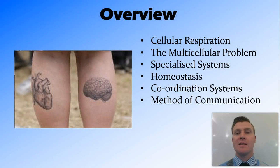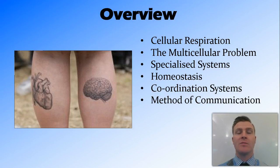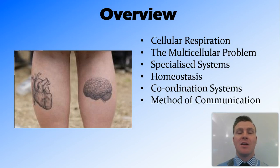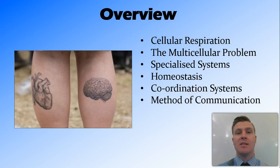In this video, we've revised cellular respiration — the way that all cells get their energy by breaking down glucose in the presence of oxygen. We've talked about how it's hard for those cells inside a multicellular organism to get nutrients from the outside, so therefore specialised systems are required. We've talked about the maintenance of a constant internal environment through homeostasis and how these specialised systems and homeostasis all need some sort of coordination system to keep them operating correctly — and how these coordination systems communicate through either the nervous system with electrochemical impulses, or the endocrine system using chemical messengers or hormones.